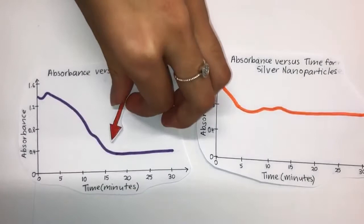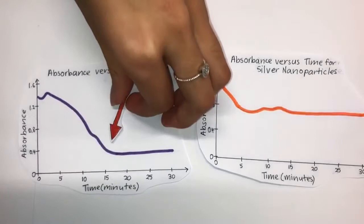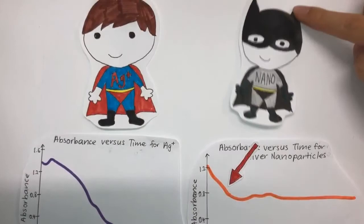From this, it can be concluded that silver nanoparticles are a more effective catalyst. This is why Captain Nano defeated Iron Man.